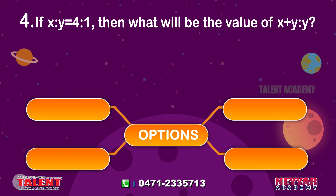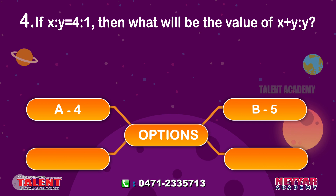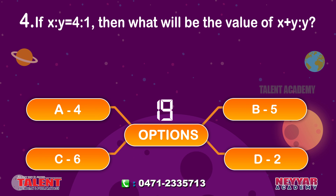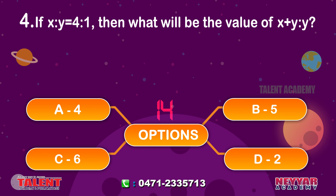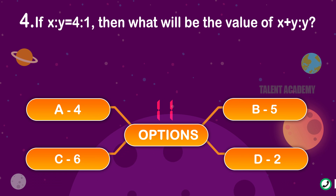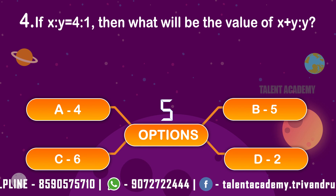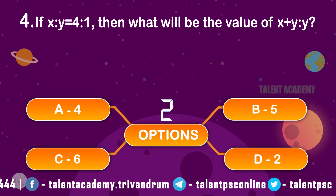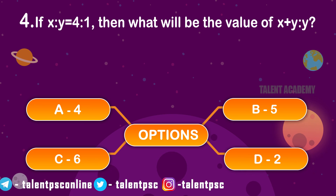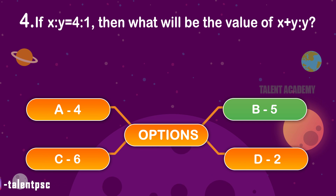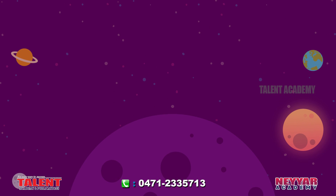If X is to Y is equal to 4 is to 1, then what will be the value of X plus Y is to Y? Options: A 4, B 5, C 6, D 2. The correct answer is B 5.